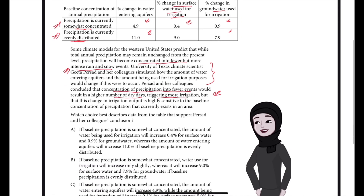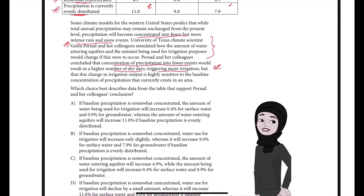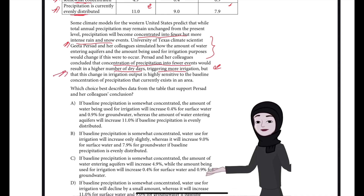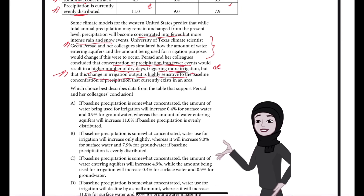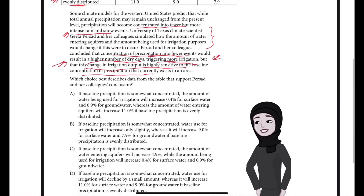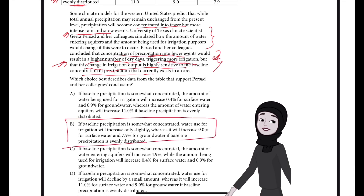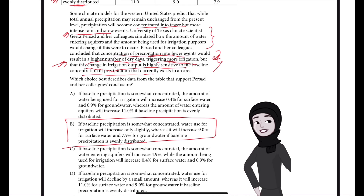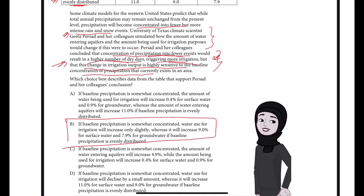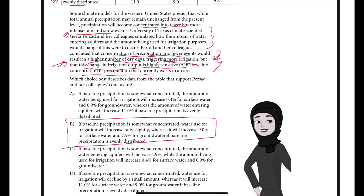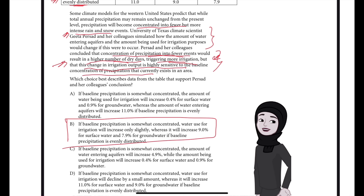A lot of data has been given across various answer choices, but we need the one that supports Prasad and her colleagues' conclusion. Their conclusion is that concentration of precipitation into fewer events will result in a higher number of dry days, triggering more irrigation, and that this change is highly sensitive to the baseline concentration of precipitation that already exists in the area. For that reason, answer choice B is the best answer. The text explains that according to some climate models, precipitation in the western United States will become concentrated into fewer, more intense rain and snow events.